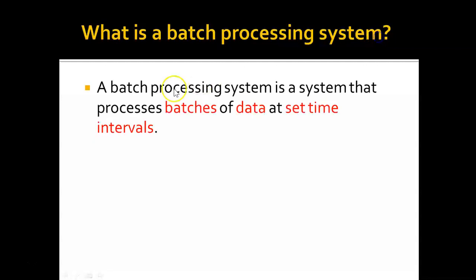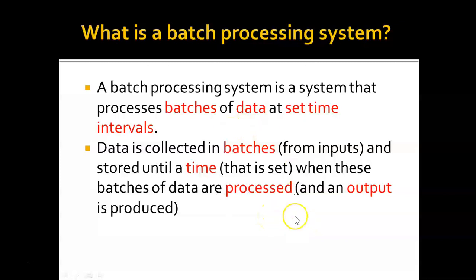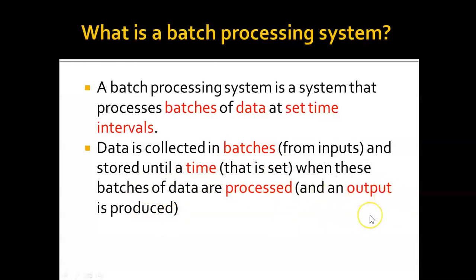What is a batch processing system? A batch processing system is a system that processes batches of data at set time intervals. Data is collected in batches from inputs and stored until a set time when these batches of data are processed and an output is produced. An example is a payroll system — we collect information about each employee, including their work hours and pay rate per hour, then at the end of the month process the batches of data to calculate the amount each employee is paid, and output a payslip.